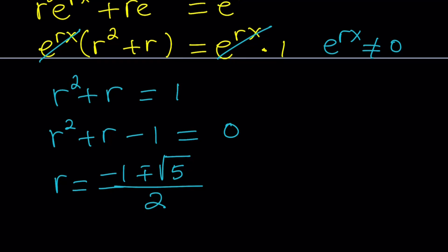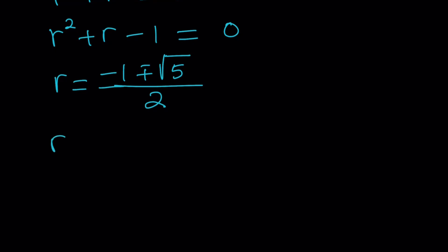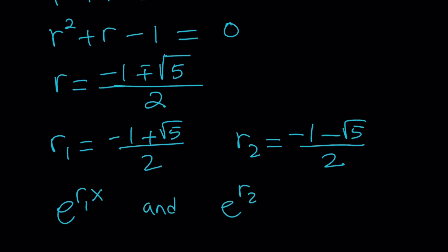But this gives us two solutions. So let's go ahead and distinguish between them because we want to separate them. So we can call the first one r1 or r sub 1. And I can write the plus sign first because I like to be positive. And then the second one is r2, which is obviously a negative value. So there are two r values. Notice that e to the power rx was a solution.